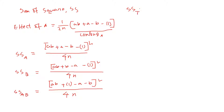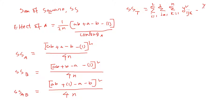We can also calculate the total sum of squares. With two variables — i for A with two levels, j for B with two levels, and replication k up to N — the total sum of squares is the summation of each data point Y_ijk squared, summed over all observations, minus the grand total squared divided by 4N.